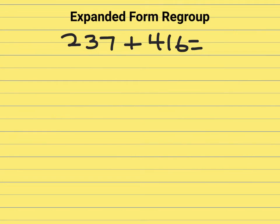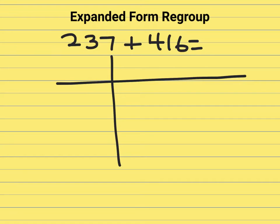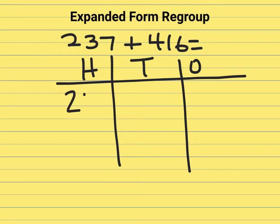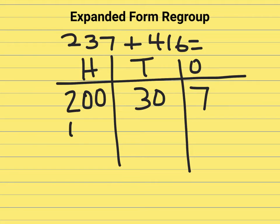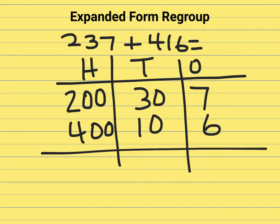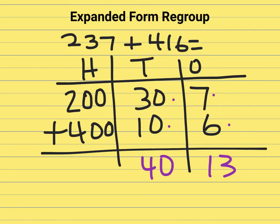I'm going to solve this problem with expanded form and there will be regrouping. I will go ahead and make my chart of hundreds, tens, ones. I'll pull apart 237 in expanded form, and 400, 10, and 6 in expanded form. I will show that I'm adding: 7 plus 6 is 13, 30 plus 10 is 40, and 200 plus 400 is 600.